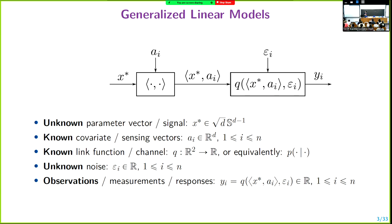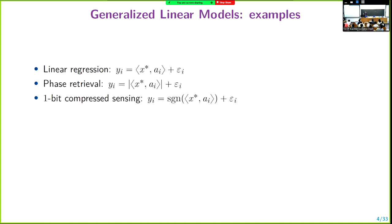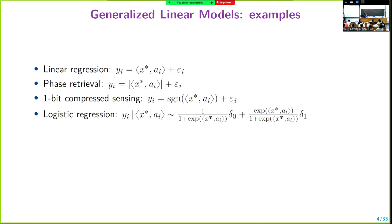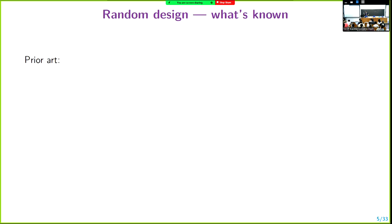That's the model. This, of course, incorporates many things. For example, linear regression, phase retrieval, 1-bit compressed sensing — by specifying the function q. And logistic regression. Here I'm specifying the conditional law of y given the linear measurement. Also, polynomial regression, and sometimes this generalized linear model is also known as single index model, and so on.